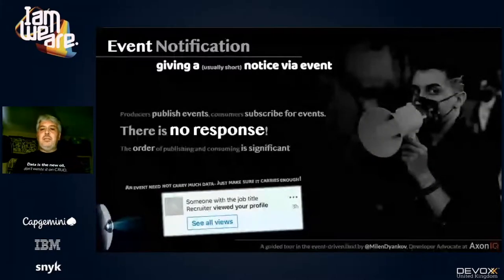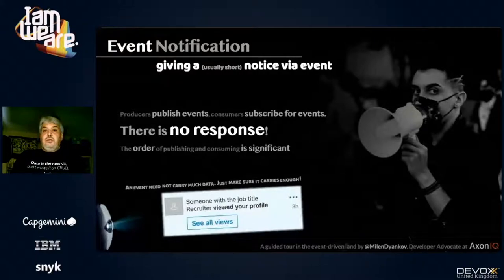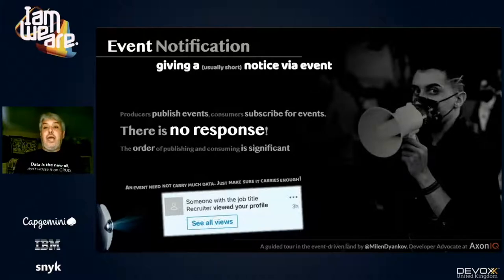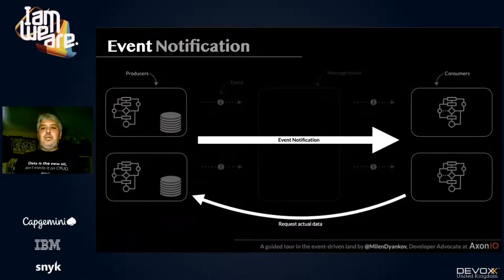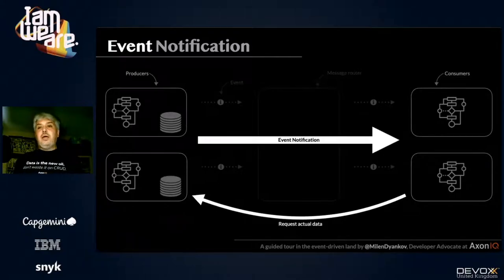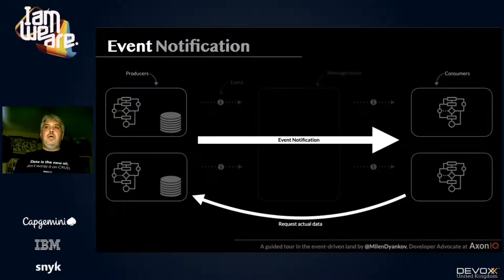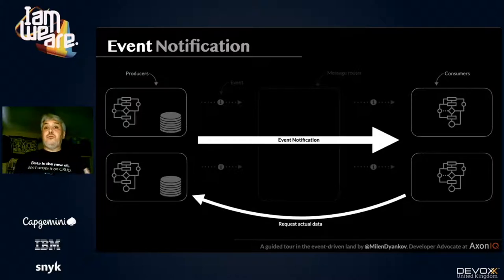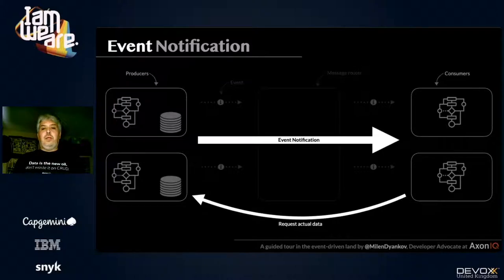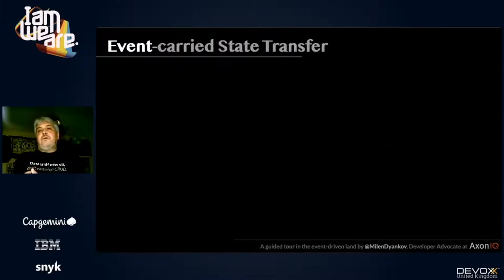It's kind of like when LinkedIn sends you a notification that someone viewed your profile — probably the most useless notification ever — because you don't know anything; you just know something happened. You still have to go to LinkedIn and check who actually viewed your profile. That's the flow: you get a notification, something happened, and then you have to go to the producer and say 'give me the data.' The consumer still needs to know where the producer is and how to get the relevant data.